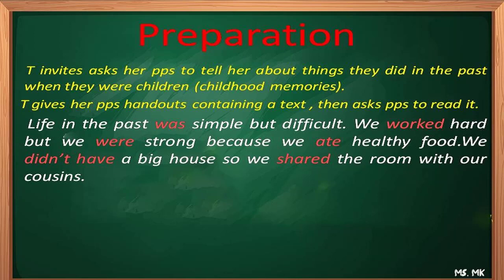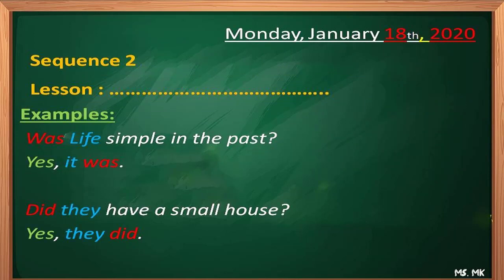In the presentation phase I'm going to write the date, sequence, and lesson, leaving the title empty. I'm going to write my examples highlighting the verb, the subject and so on. I'll write a question with verb to be and a question with verb to have, showing pupils that there are two types of questions — yes or no questions and WH questions. I used verb to have to show pupils it is not considered an auxiliary in English but rather an irregular verb.